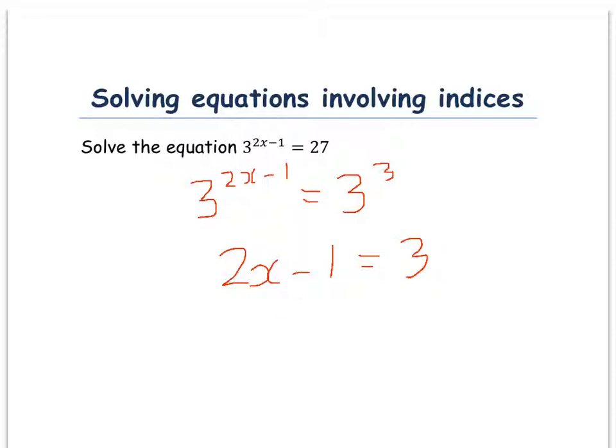We add 1 to both sides, so 2x equals 4, so x is equal to 2. And if you substitute that 2 into the original equation, well 2 times 2 is 4 minus 1 is 3, and 3 cubed is 27, so that works quite nicely.